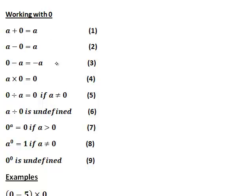The third property: 0 minus a is negative a. And the fourth property: 0 times a number is just 0, because 0 lots of a number are just 0.